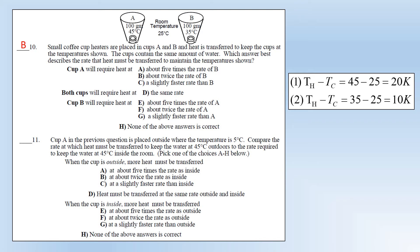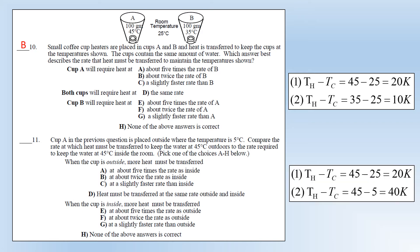Question eleven: cup A from the previous question is now placed outside where the temperature is 5 degrees. Compare the rate of heat transfer needed to keep the water at 45 degrees outdoors versus indoors. Inside the room the temperature difference is 20 degrees; outside it's 40 degrees. So we're going to have to supply twice as much energy when it's outside - that's option B.